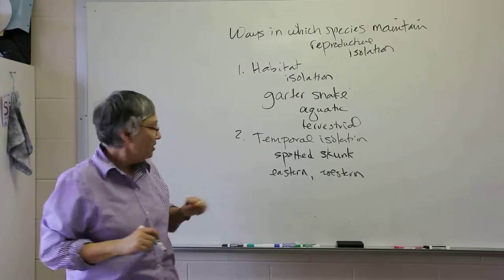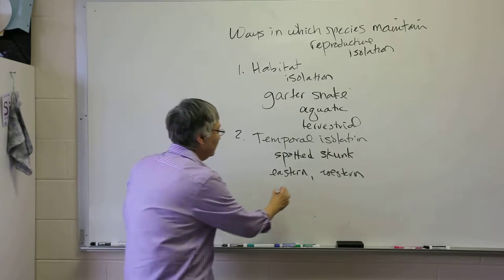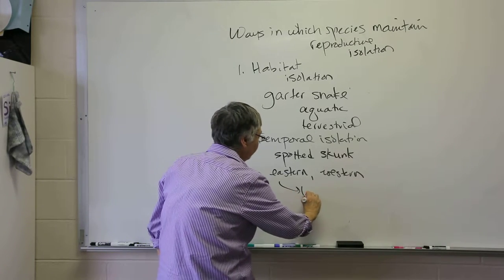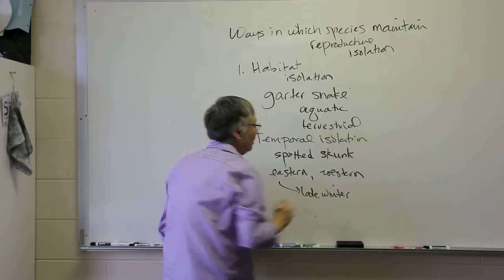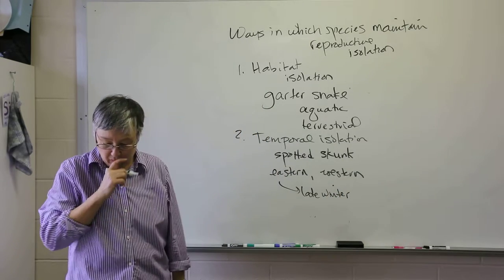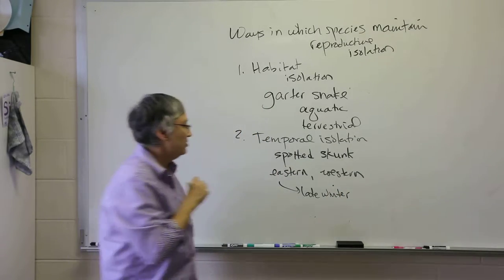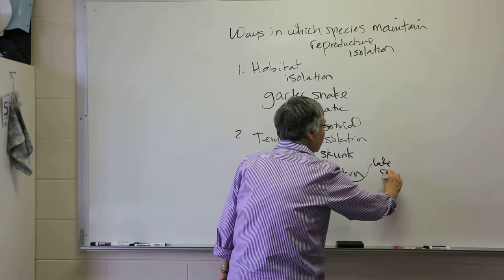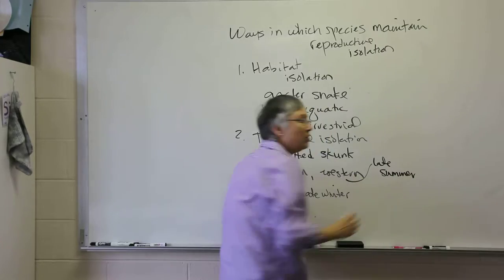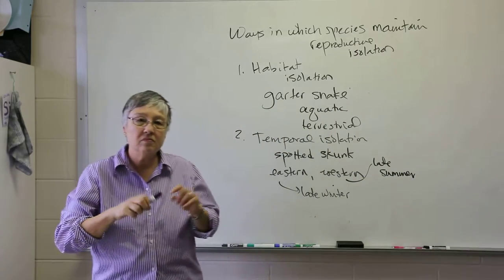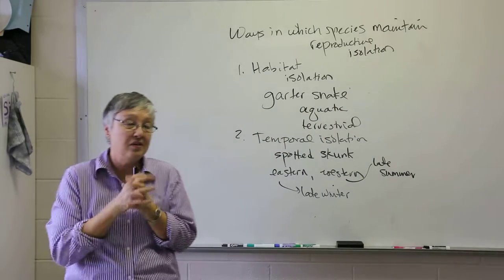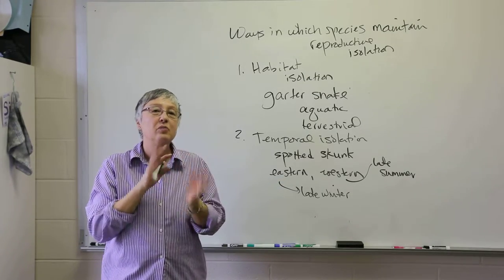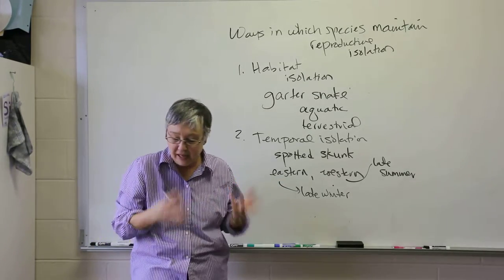So the eastern spotted skunk actually reproduces in late winter, whereas the western spotted skunk actually reproduces in the late summer. So even though both species are present in the same area where their ranges overlap, they're not reproductively active at the same time.